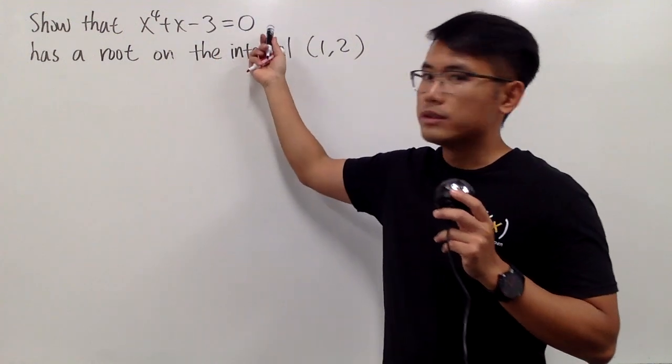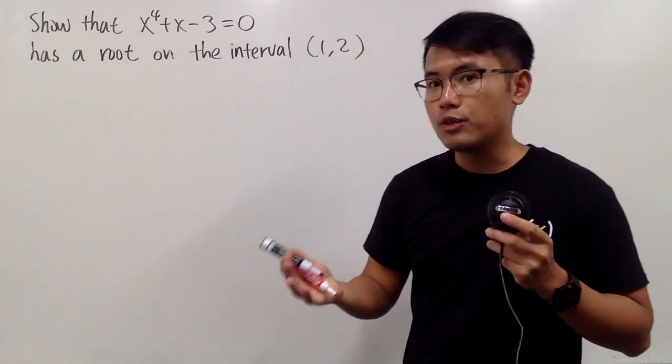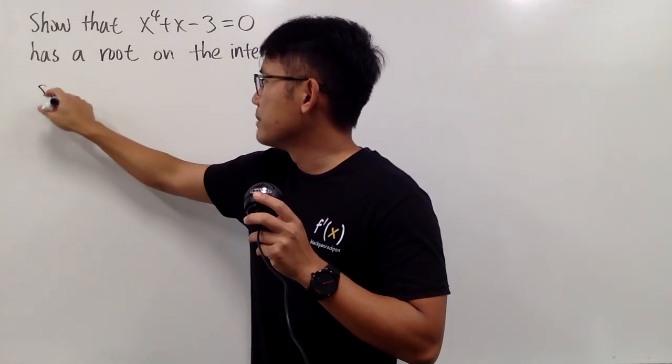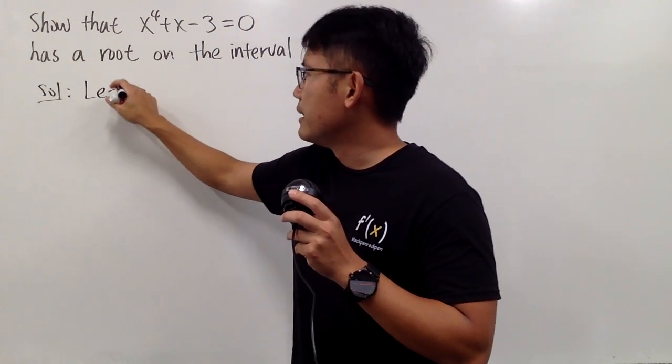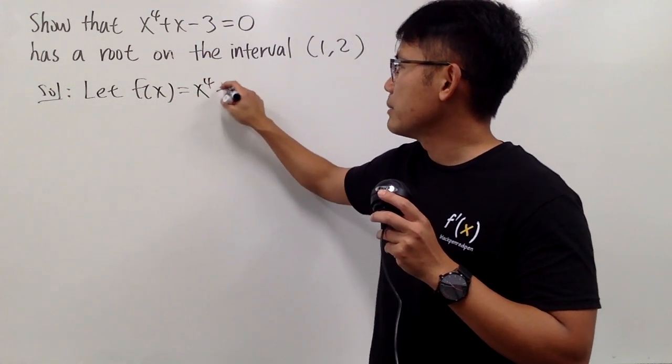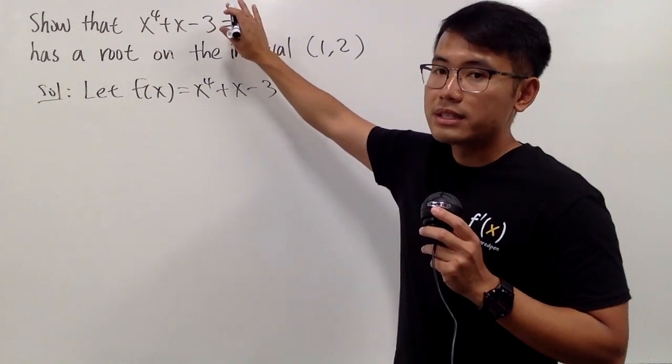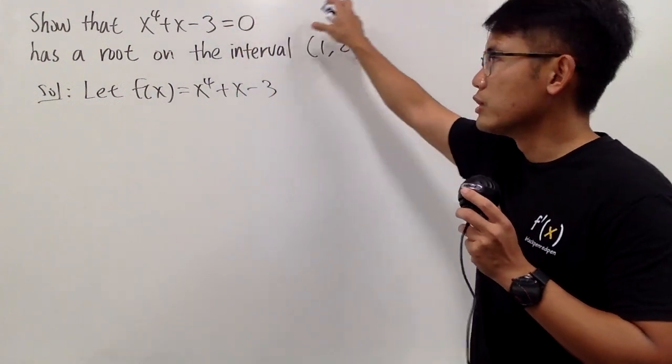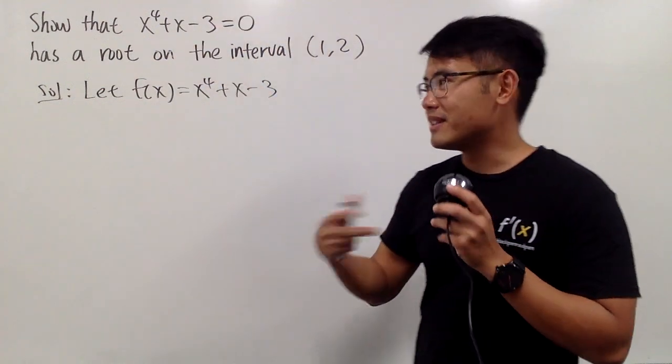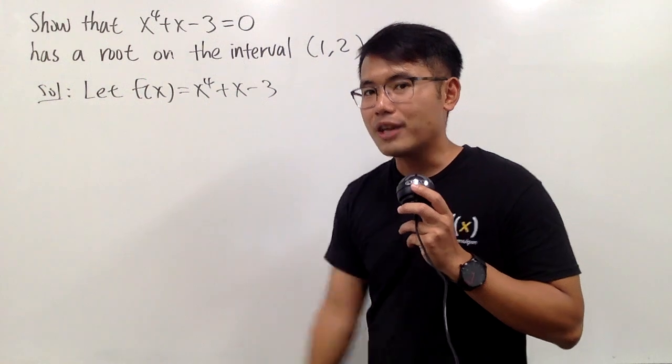Notice that this equation is equal to 0 already, so let me just take this to be defined to be my function f. So I'm going to just go ahead, here's my solution. Starting by let the function be x to the fourth power plus x minus 3. And if this equation wasn't equal to 0, then of course we can just move the things on the right-hand side to the left and then define the left-hand side to be the function.